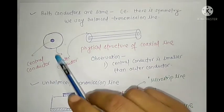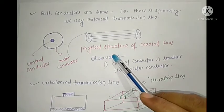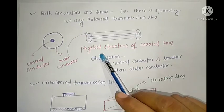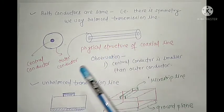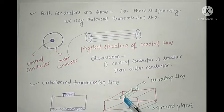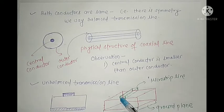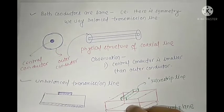When you observe such a structure where there is a difference in geometry of both conductors, you can directly conclude that it is an unbalanced transmission line. To identify an unbalanced transmission line: if the cross-sectional area of the first conductor and the cross-sectional area of the second conductor are different, the transmission line is unbalanced. For example, in a microstrip line, the top conductor and the ground plane have different cross-sectional areas, so it is an example of an unbalanced transmission line.